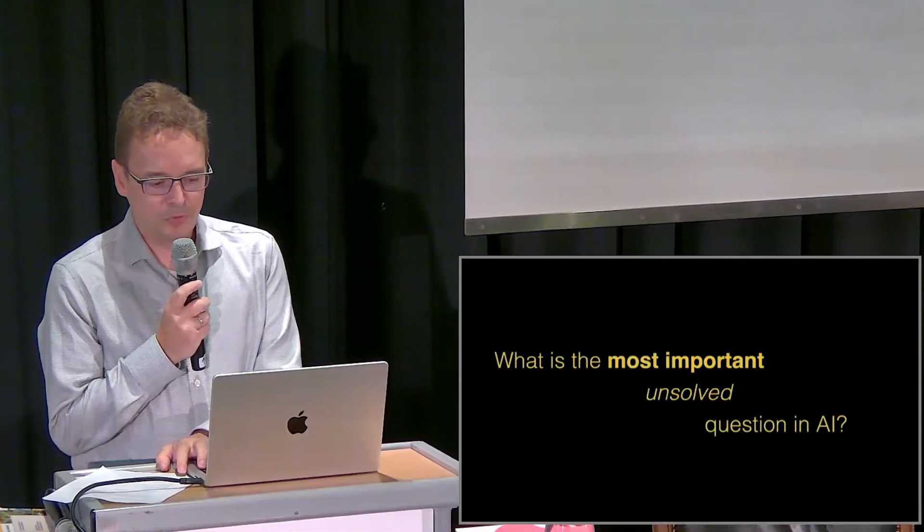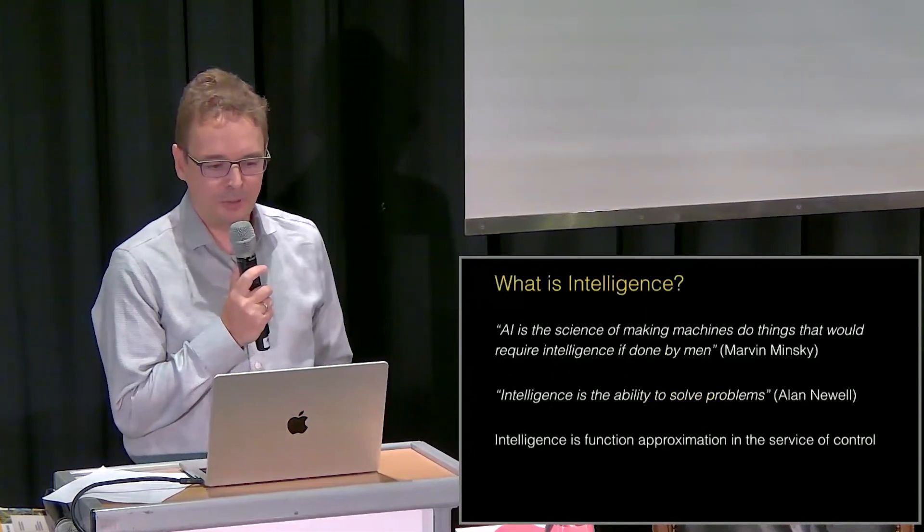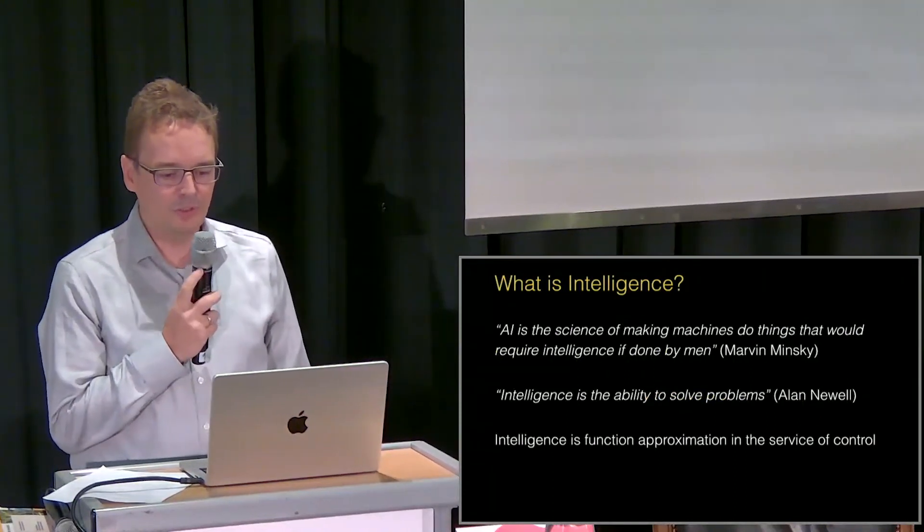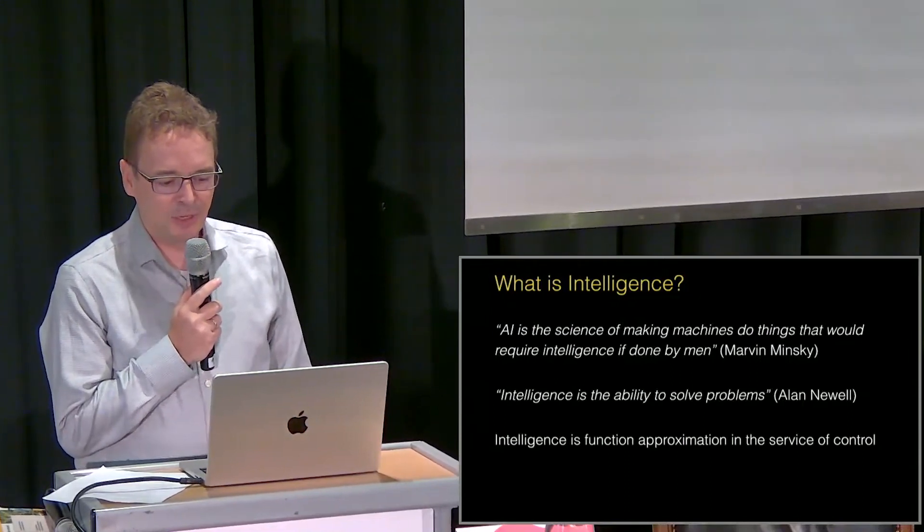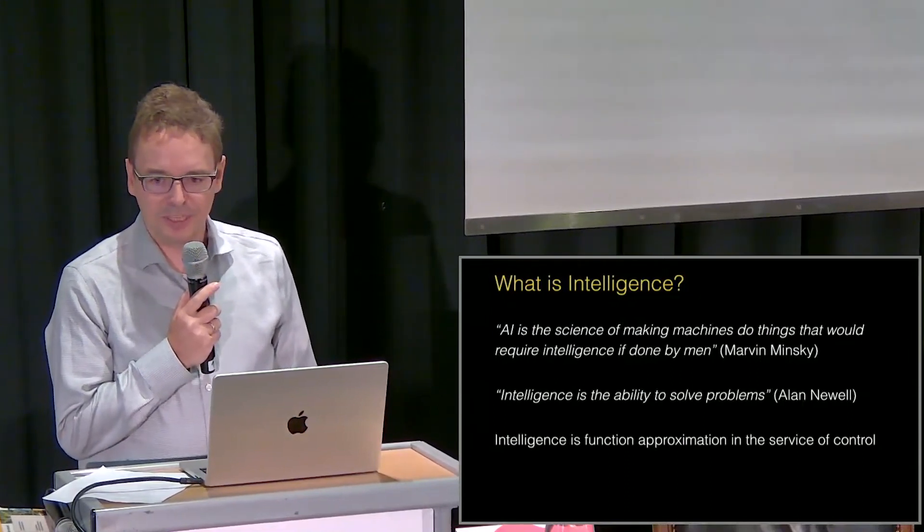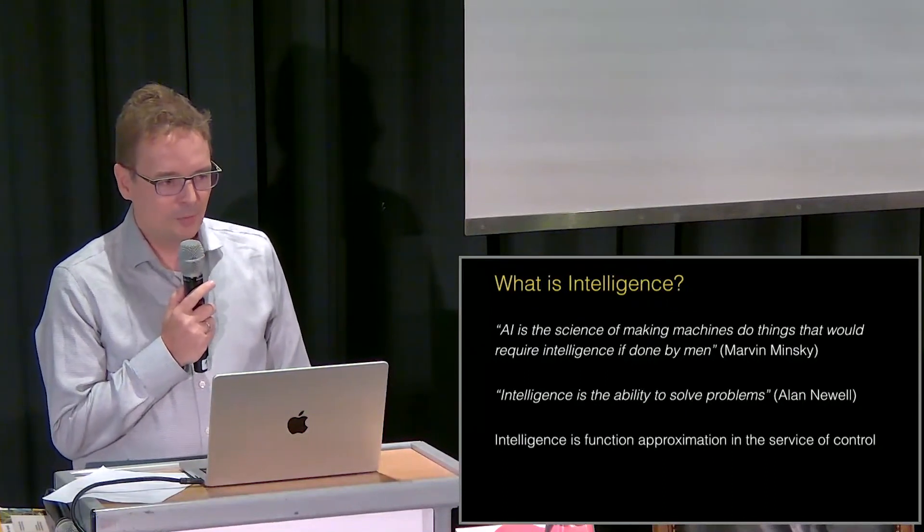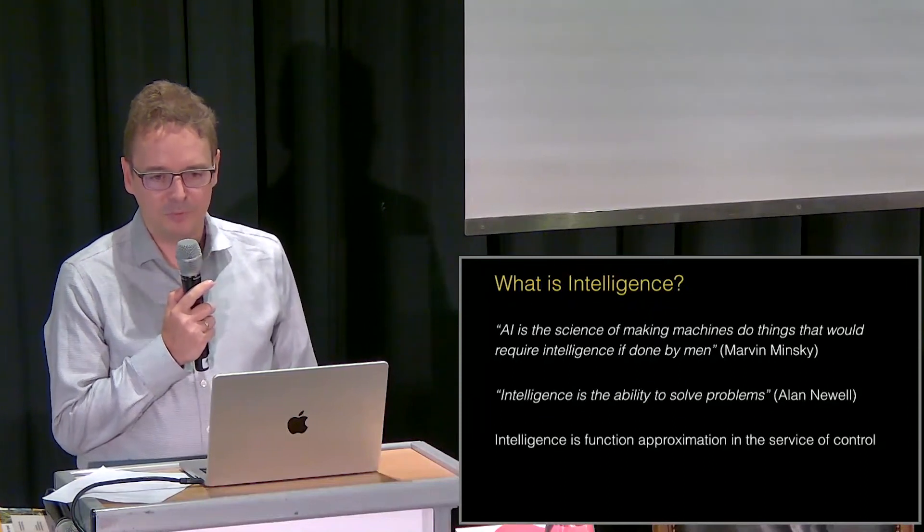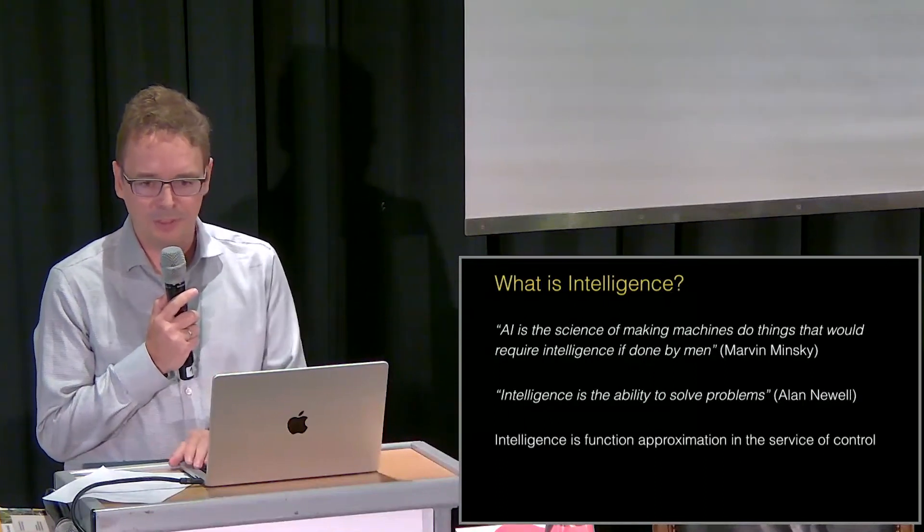So what's the most important unsolved question in AI? Arguably, it's always been the question, what is intelligence? Minsky said that AI is the science of making machines that do things that would require intelligence if done by man. And for Alan Newell, a psychologist who built AI models, it was intelligence is the ability to solve problems. You could also say that intelligence is the ability to approximate functions, usually in the service of control. It's the ability to make models, to produce behavior.